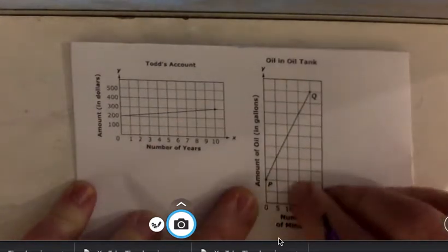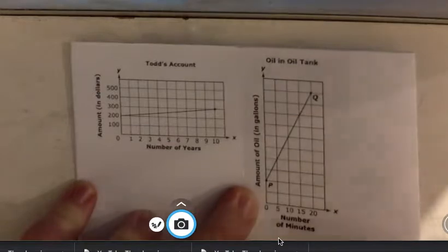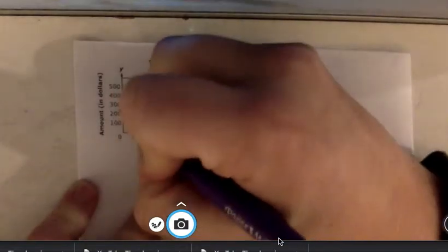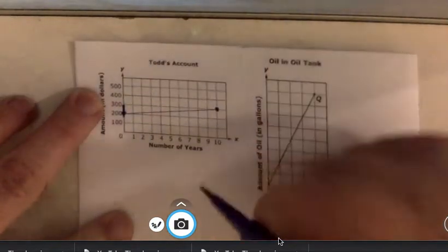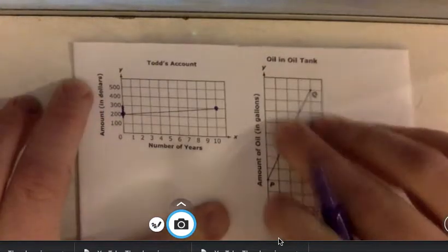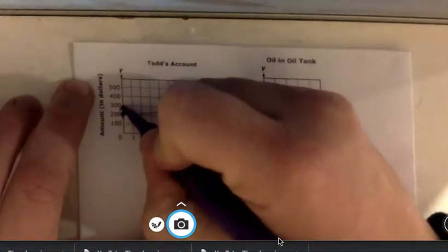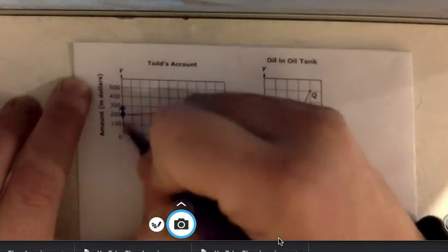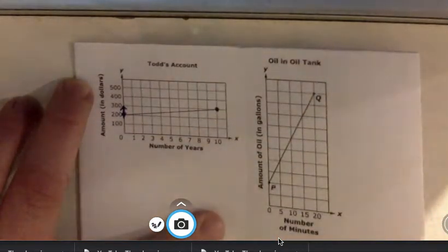So first things first, we need to first find what the slope is for each one. So we're going to do that here with this one. It looks like this goes from this point to this point where it crosses nicely on the x and y coordinate plane. So it goes up, it looks like $100 over 10 years in time.